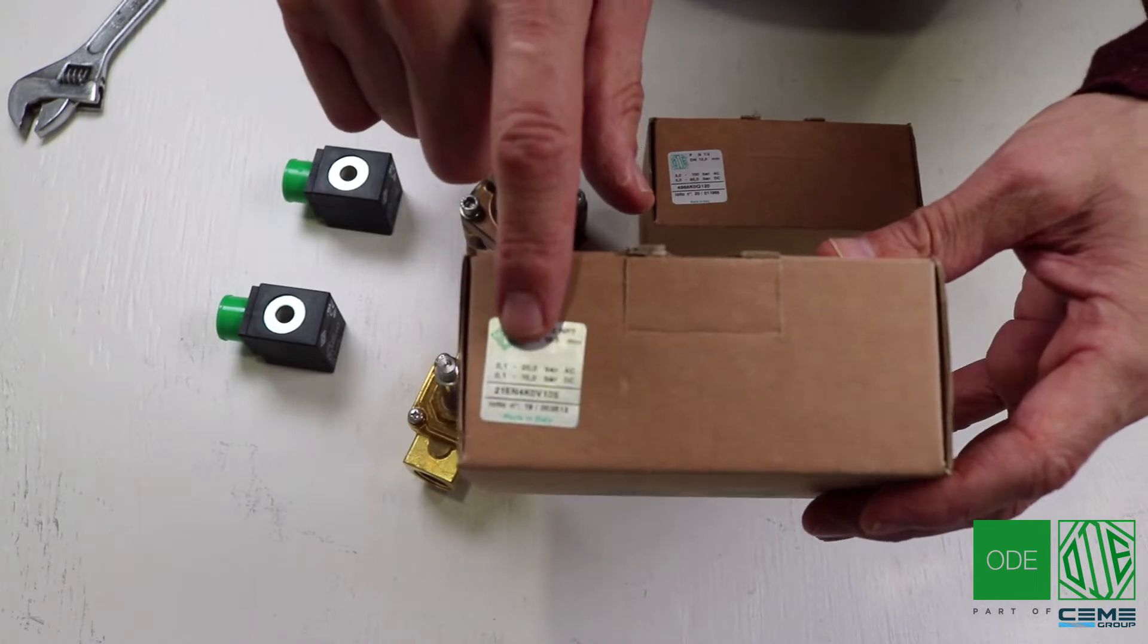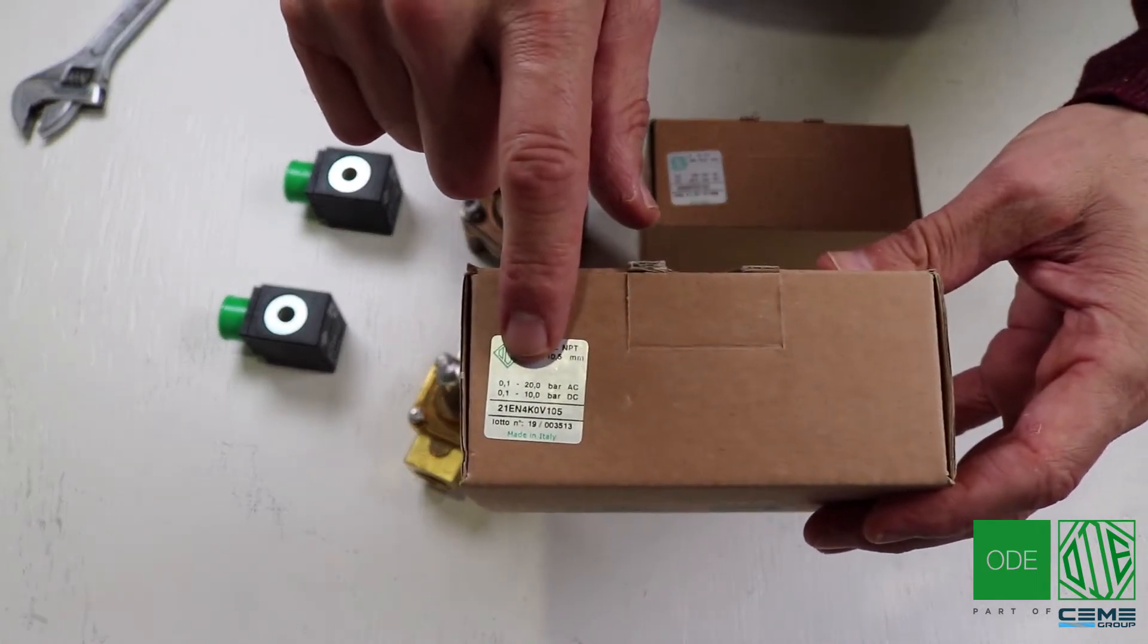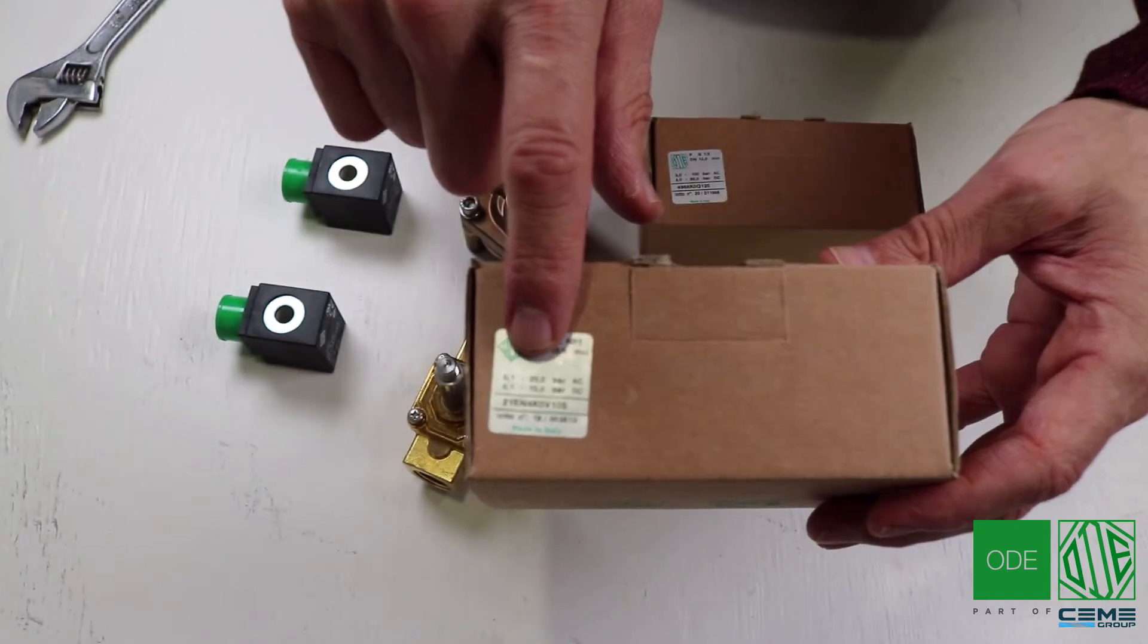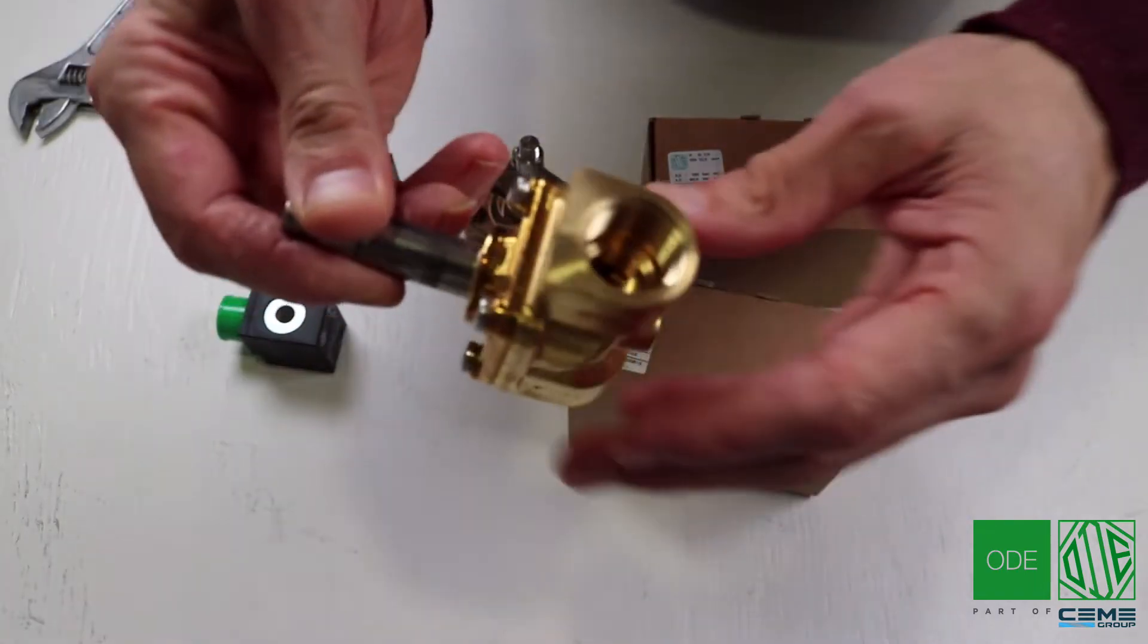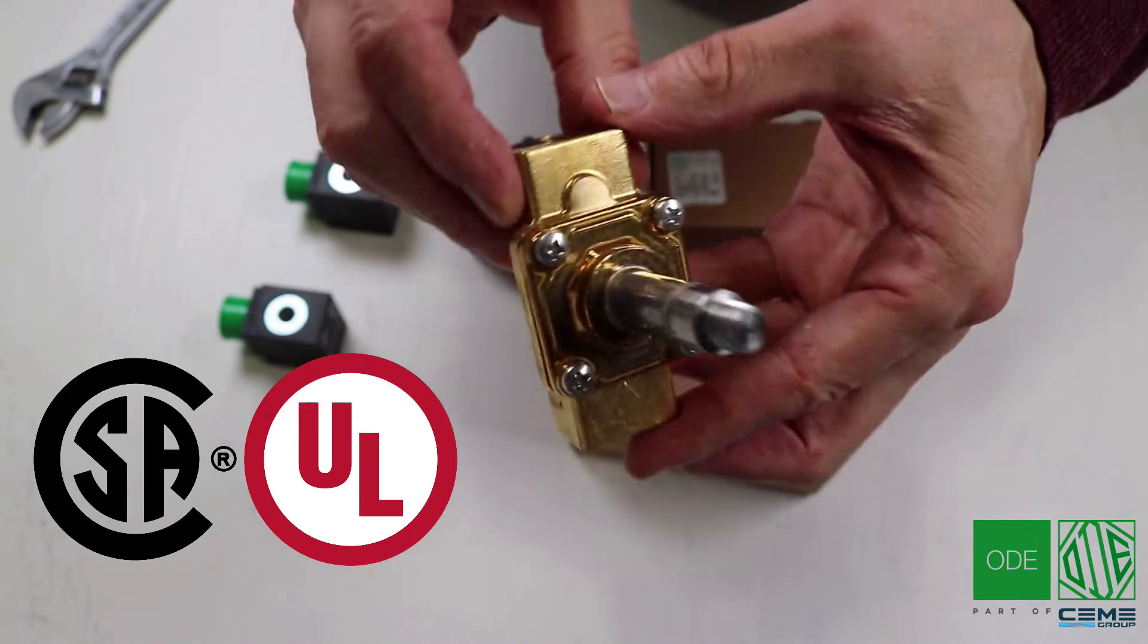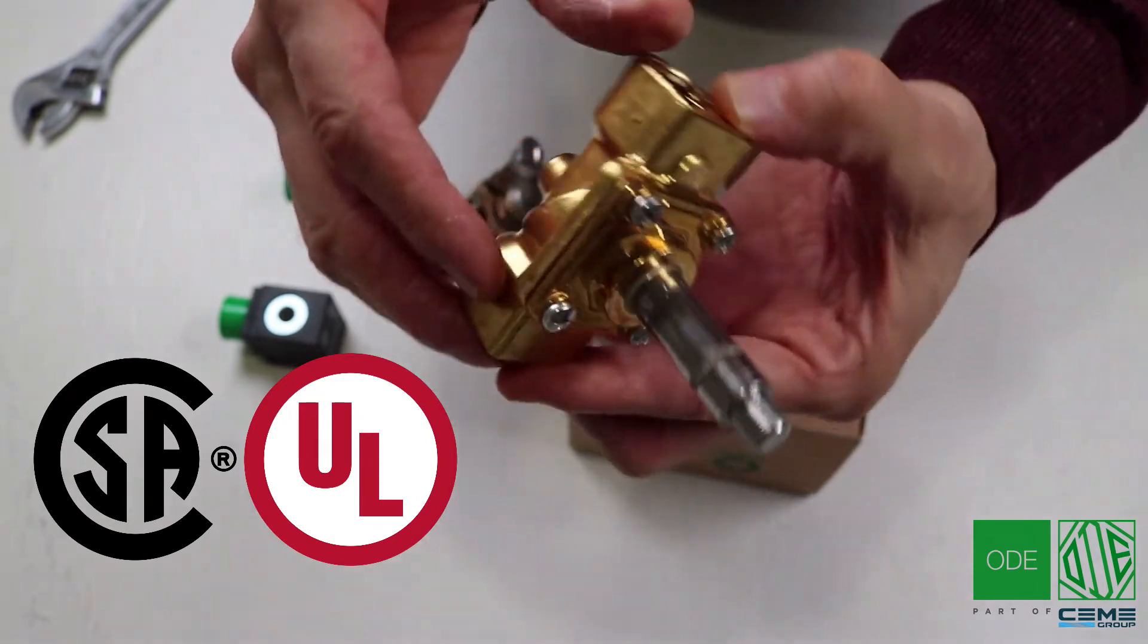This is a 21EN4 high-pressure valve. Depending on the coil you are using, you can have it in AC or DC up to 20 bars. This valve is CSA and UL approved and it comes with a standard B series coil.